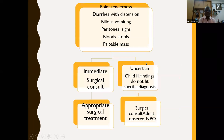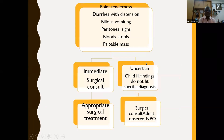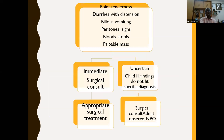For management: if there are no specific findings, no tenderness, no distension, with or without fever, vomiting, or diarrhea — it could be viral. Do adequate hydration; if oral fluids are retained, discharge home. If the patient is dehydrated and not retaining oral fluids, keep for daycare, rehydrate, and do bowel rest for 12 to 24 hours; if improving, discharge. If there is point tenderness, diarrhea with distension, bilious vomiting, peritoneal signs, bloody stools, or a palpable mass — call the surgeon immediately. If features are uncertain but the child is ill and findings do not fit any specific diagnosis — get a surgical consult, admit, observe, keep nil per oral, and if no improvement, again call the surgeon and closely follow up the child.